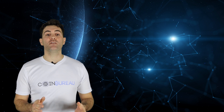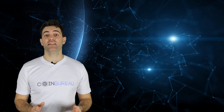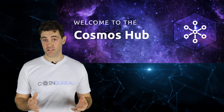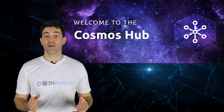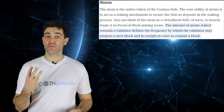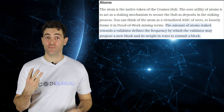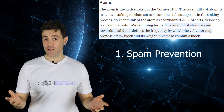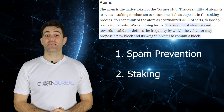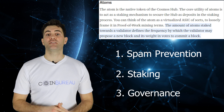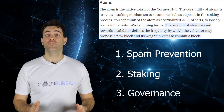Atom is the native currency issued on the Cosmos hub — the first blockchain on the Cosmos network. There may be many more tokens when additional blockchains are launched. Atom tokens have three use cases within the Cosmos hub: first, for fees as a spam prevention mechanism, similar to gas on Ethereum; second, as staking tokens to incentivize honest node behavior; and third, to participate in the governance of the Cosmos hub.